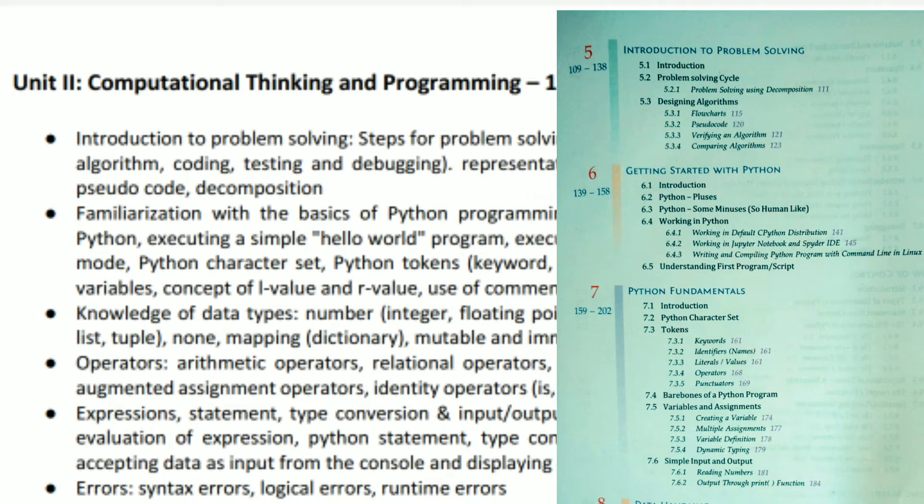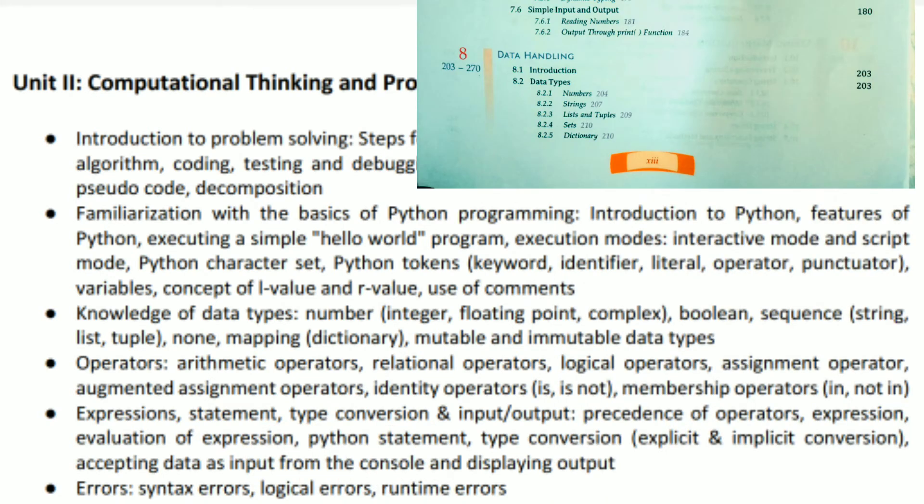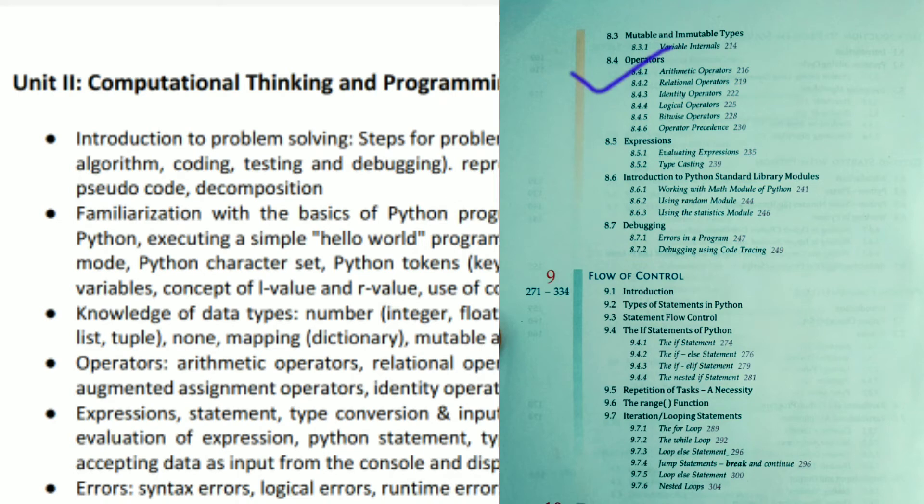Moving to next, we will be having knowledge of data types. Data types we will be knowing in chapter number 8. In chapter number 8, Data Handling, you will be knowing about data types, which type of data types Python supports. And then moving forward, you will be getting operators. Operators are also of this part only—mutable, immutable data types, and then finally expressions where you will be knowing about arithmetic operators, typecasting, all these. Finally, errors. Errors are also of chapter number 8 only. So till point 6 of Unit 2, we will be covering chapters 5 to 8.